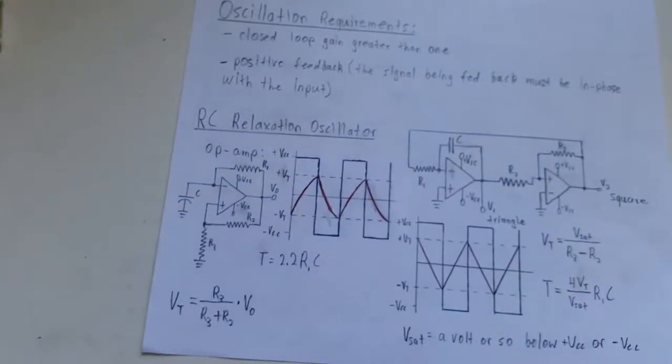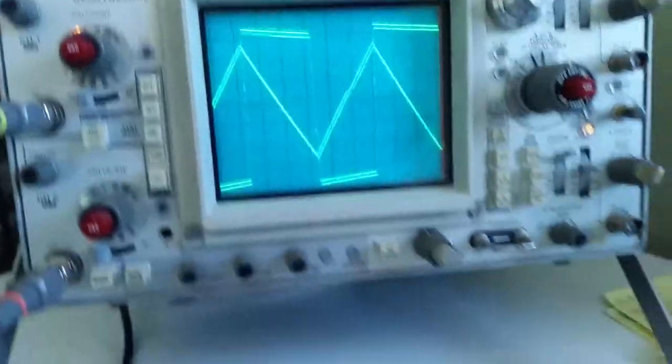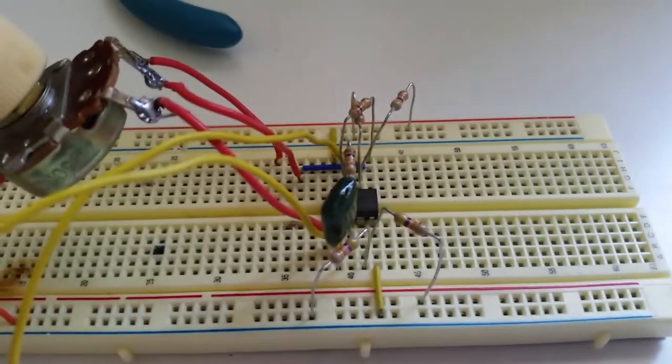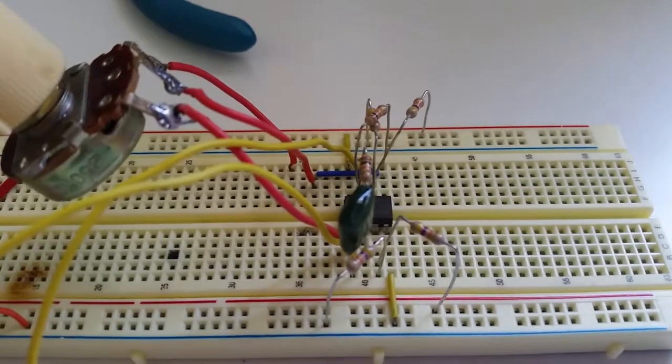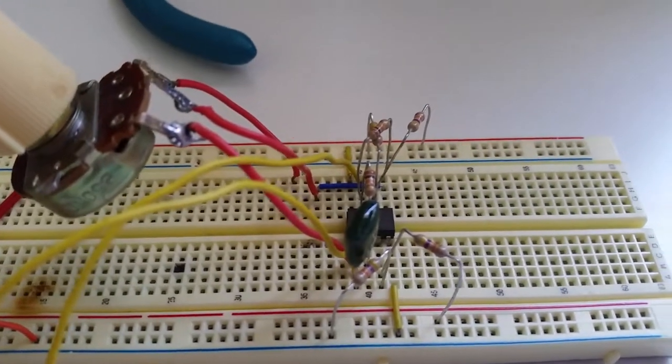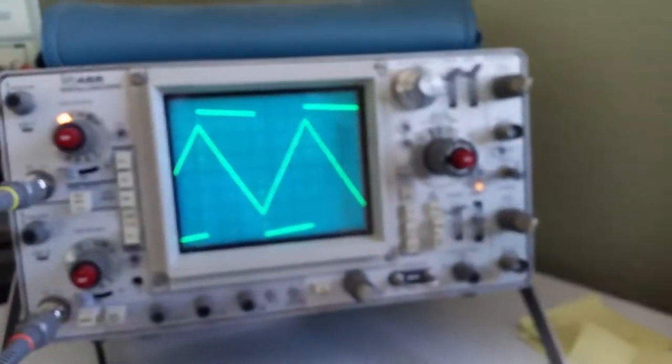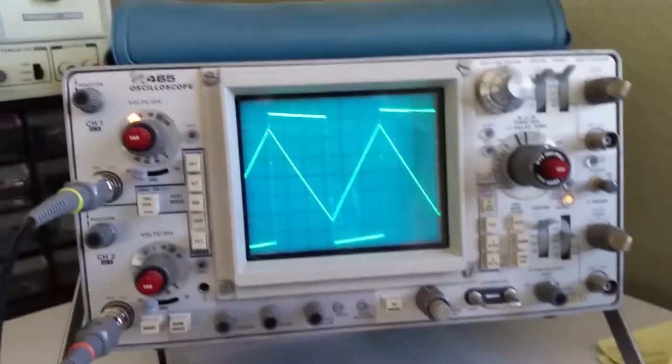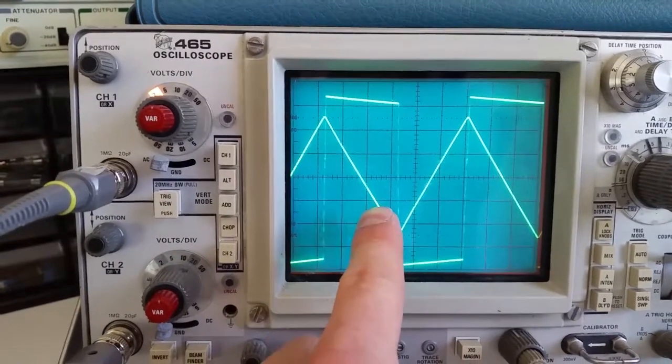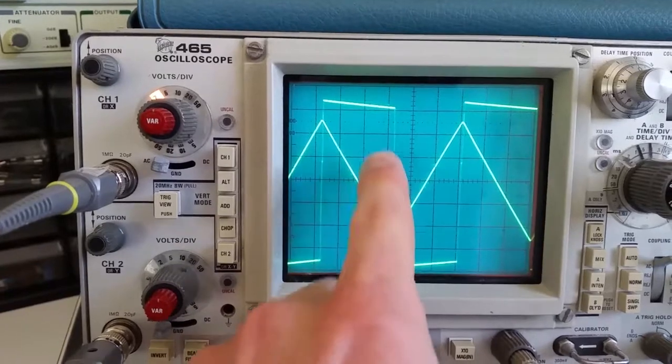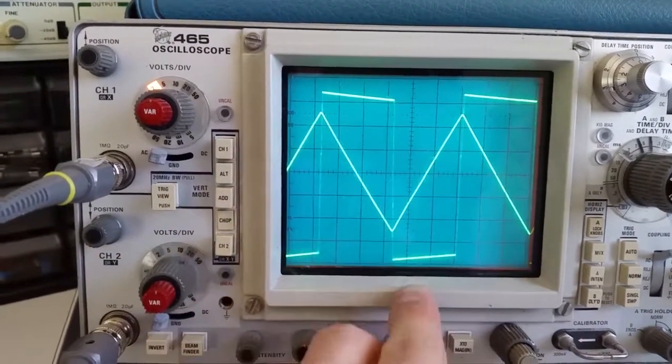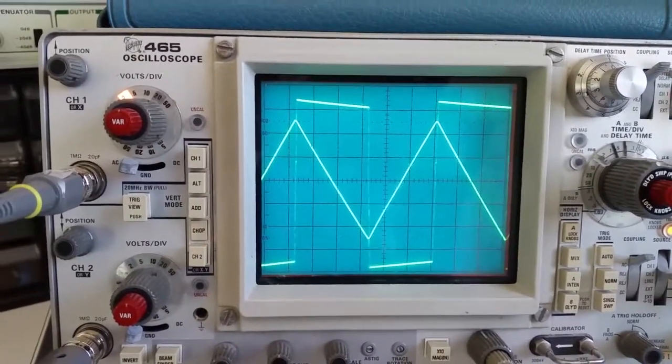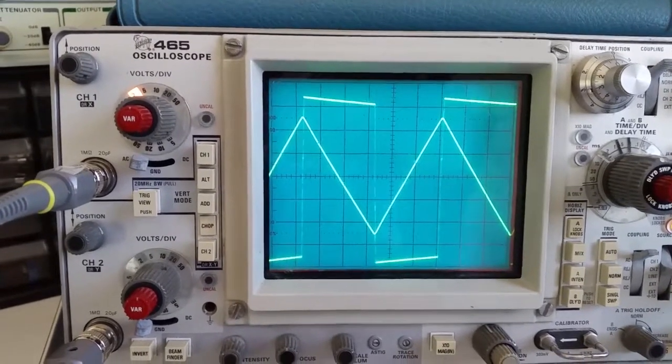I went ahead and constructed this, and here's the circuit. I added a potentiometer in there. See, the thing about oscillators is there's no guarantee that they'll actually work. For instance, right now, I got it working, and as you can see, you get the triangle wave here coming off that first op amp, and off the second, it rails out and it makes your square wave. So that's how you make a triangle wave.